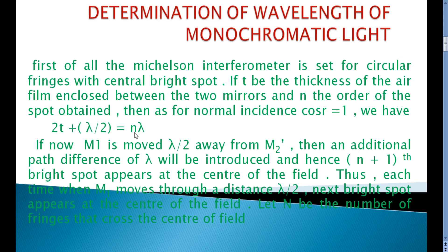Suppose the first circle is order 1, second, third, fourth — we substitute accordingly. The mirrors M1 and M2 can be moved and adjusted using three leveling screws. By using these screws, we can move the mirrors forward or backward. Mirror M1 is moved a distance of lambda by 2 away from M2 prime.